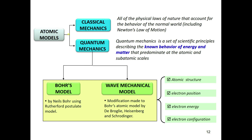The atomic model was firstly developed based on classical mechanics, including Newton's laws of motion. However, the atomic model known today is based on quantum mechanics — the study of the behaviour of energy and matter at the atomic and subatomic scale, particularly the behaviour of electrons. The scientists responsible for developing the current quantum mechanics model include Bohr, who used the Rutherford postulate model, and also de Broglie, Heisenberg, and Schrödinger, who modified Bohr's atomic model to include the wave function, where the electron behaves not only as a particle but also as a wave. The current wave mechanical model is able to explain atomic structure, electron position, electron energy, and electron configuration.